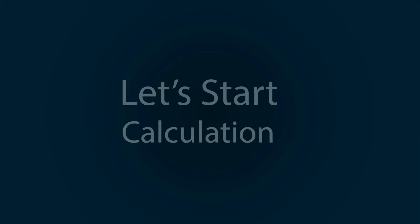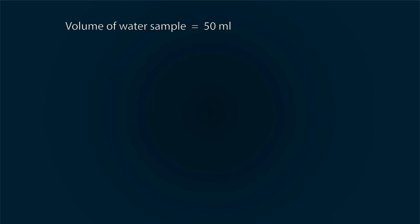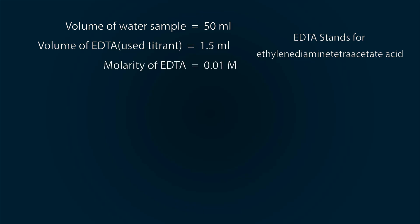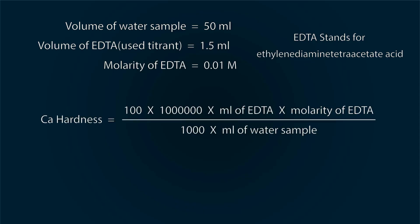Let's start the calculation. Volume of sample water is 50 milliliters. Volume of used titrant is 1.5 milliliters. EDTA stands for ethylenediaminetetraacetate acid. Molarity of EDTA solution is 0.01 molar. Formula of calcium hardness is: (100 × 1,000,000 × ml of EDTA × molarity of EDTA) / (1000 × ml of water sample). After putting the values into the formula and calculation, we have 30 ppm value. Thanks for watching.